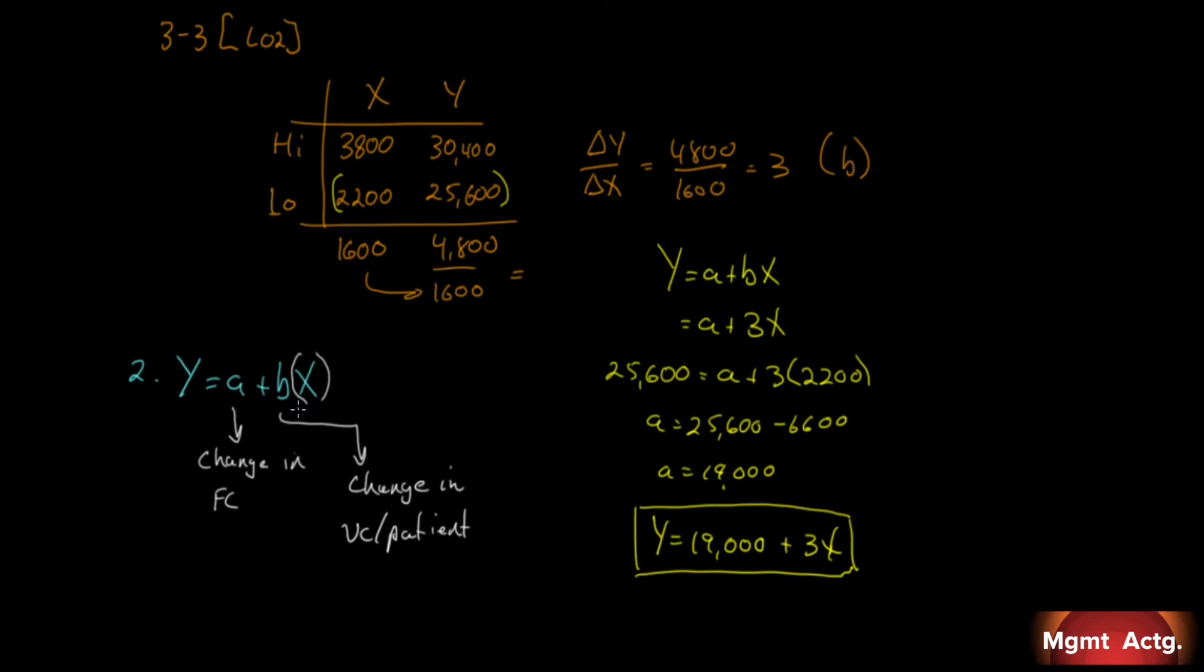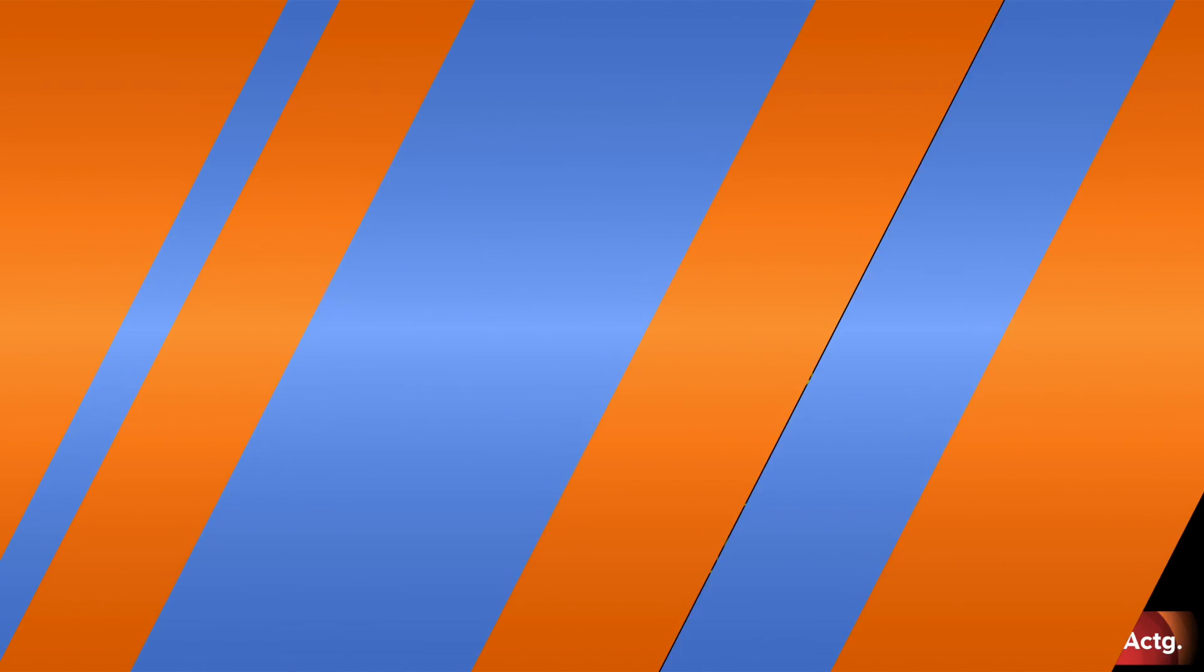Notice we haven't even changed X. When faced with a question asking what would affect this number, it's everything in the formula. Any change in these variables would affect it. But specifically not mentioning X, we deal with a change in fixed costs and change in variable cost. Exercise 3.4 is more detailed, so I'll walk through it nice and slow. This covers learning objective three, the contribution format income statement.